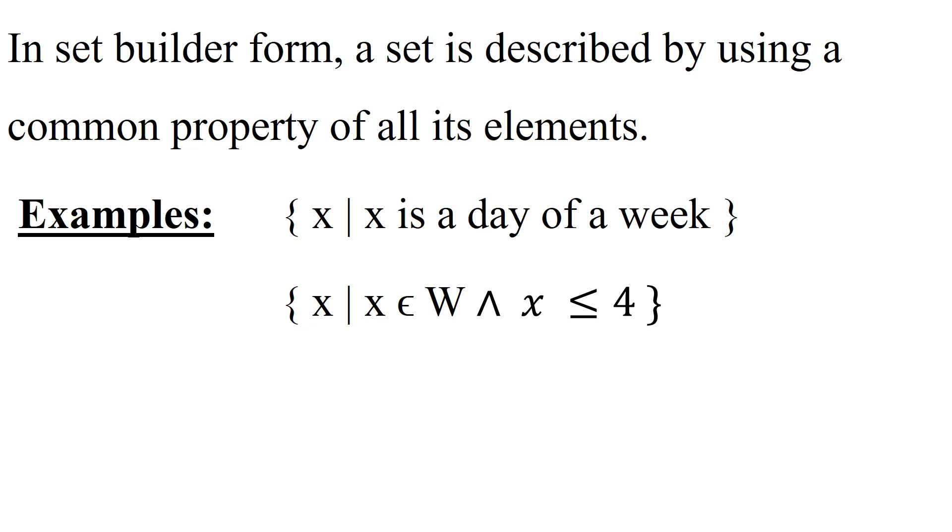The second one is x such that x belongs to capital W and x is less than equal to four, means that x shows all the elements of whole numbers that are less than equal to four. So the elements of this set are zero, one, two, three, four.